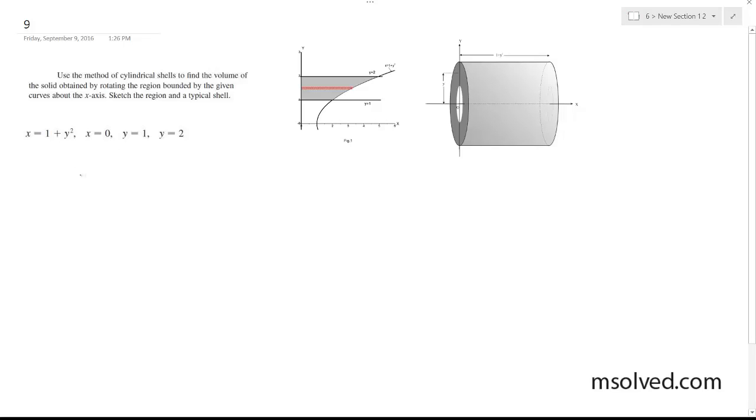So in this case, the height of the shell is going to—well, the shell itself is going to be 2 pi times the radius, which is 2 pi y. So in this case, the height's y times 1 plus y squared.